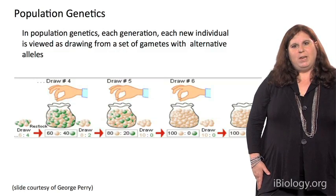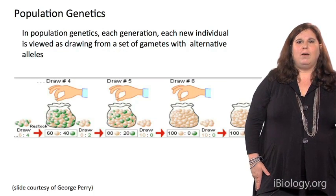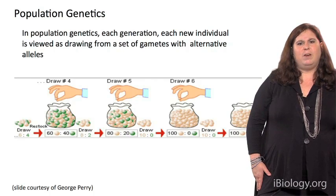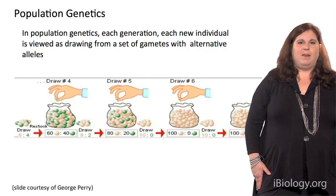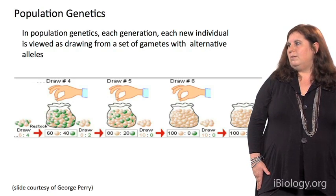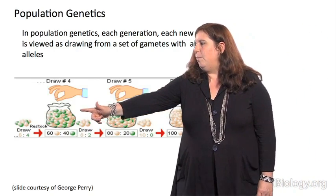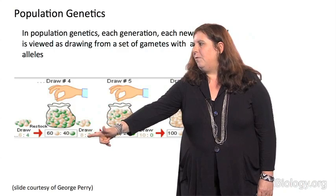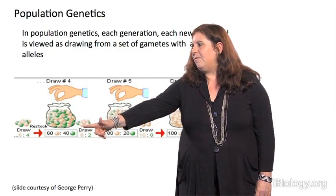In population genetics, each generation, each new individual is viewed as drawing from a set of gametes with alternative alleles. Let's use an example here in which we have a set of marbles in a bowl. And initially, we have a distribution of 60 of the white marbles relative to 40 of the green marbles. And the white and the green are representing different alleles.